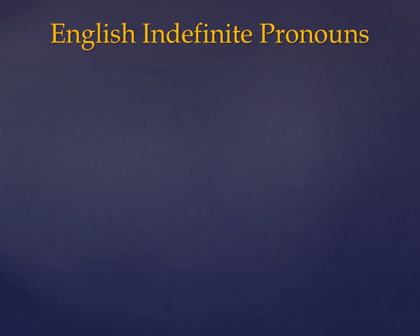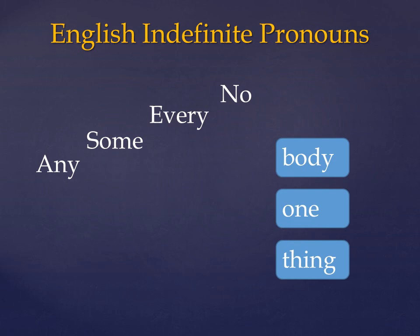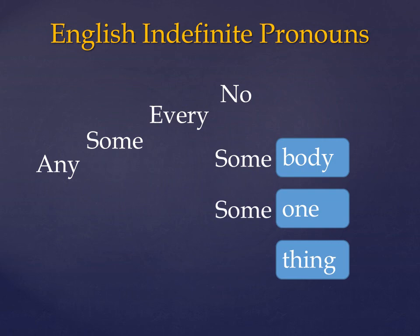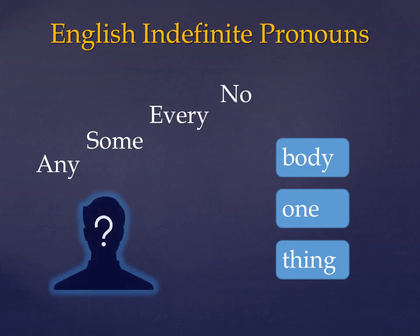In English, they can be made by placing the words any, some, every or no as prefixes to the words body, one and thing. So we get anybody, anyone, anything, or somebody, someone, something, everybody, everyone, everything, or nobody, no one and no thing. Now these are all slightly different in meaning, but we can see that their antecedent — that is the thing that they refer to — is general and non-specific.